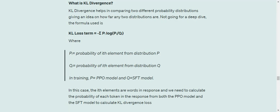The KL divergence loss term is calculated using the formula: minus summation Pi log(Pi/Qi), where Pi is the probability of the ith element from distribution P and Qi is the probability of the ith element from probability distribution Q.